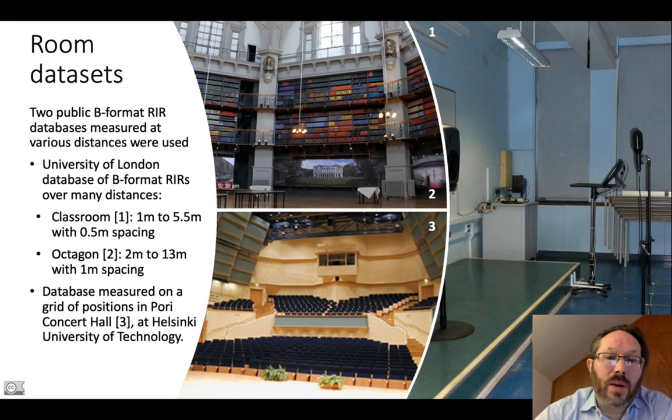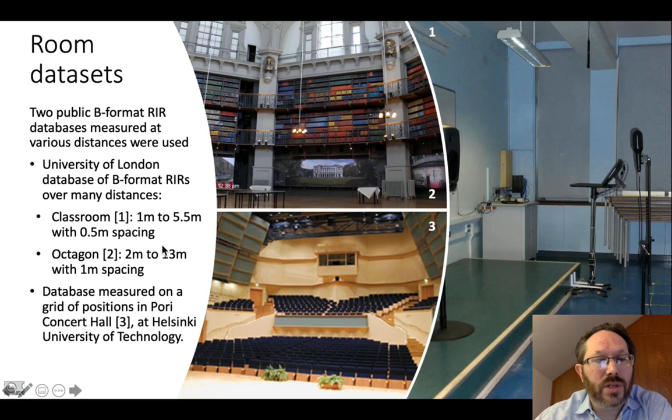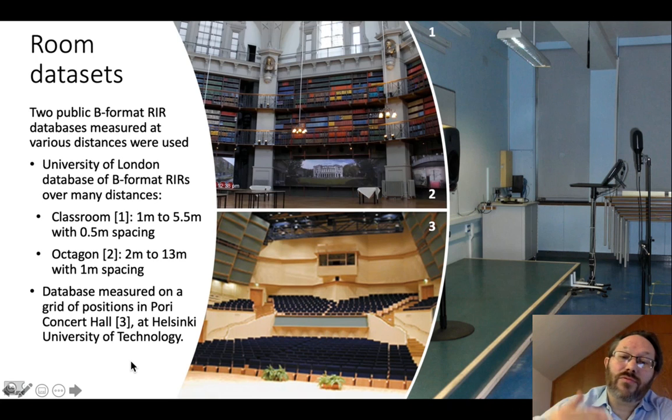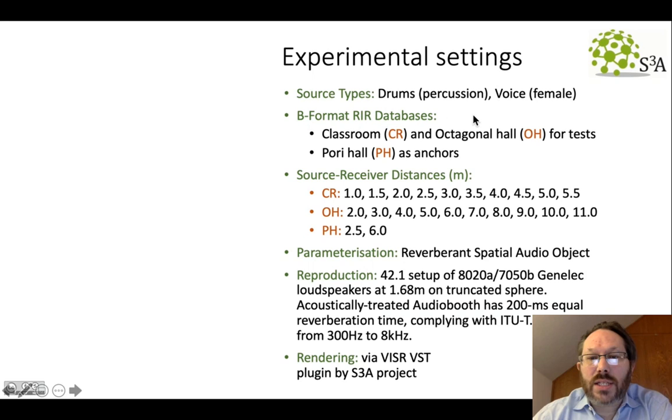To do this, we used a couple of different room data sets of measurements. One data set of B-format RIRs from the University of London gave us measurements across a wide range of different distances in a classroom. Another room was the octagon hall, which also provided a nice range of distances that we used as our two test rooms. And then we also used the Pori Hall from Helsinki as providing some reference distances. Our experimental settings considered two different localizable sources, drum sound and voice from the Archimedes data set.